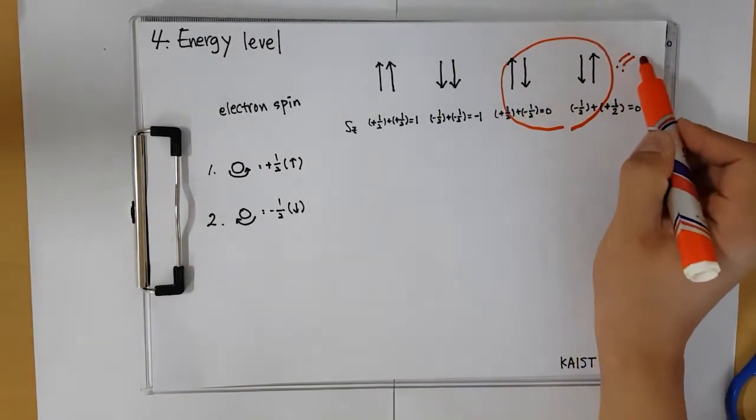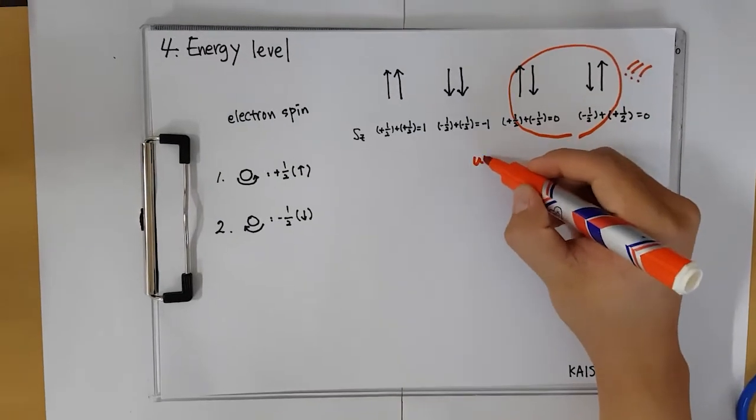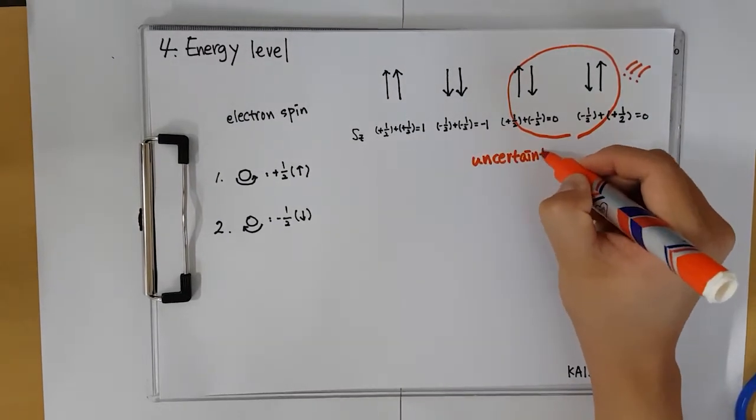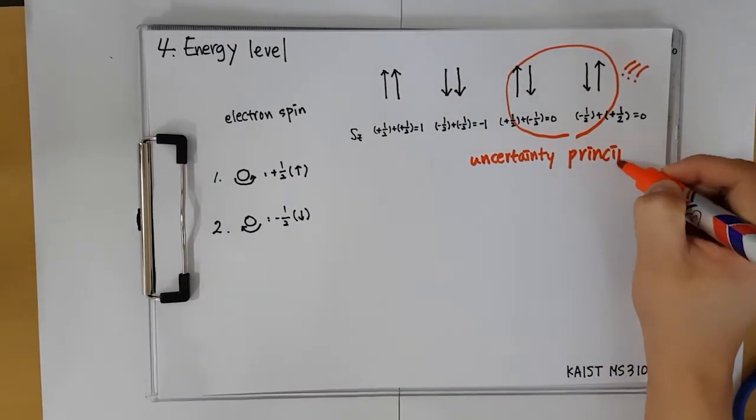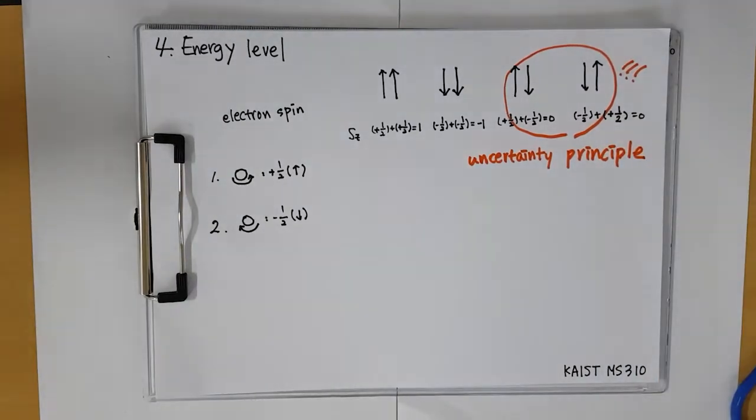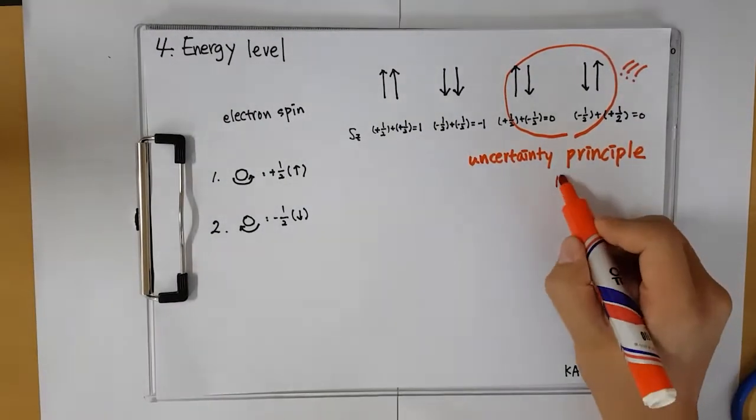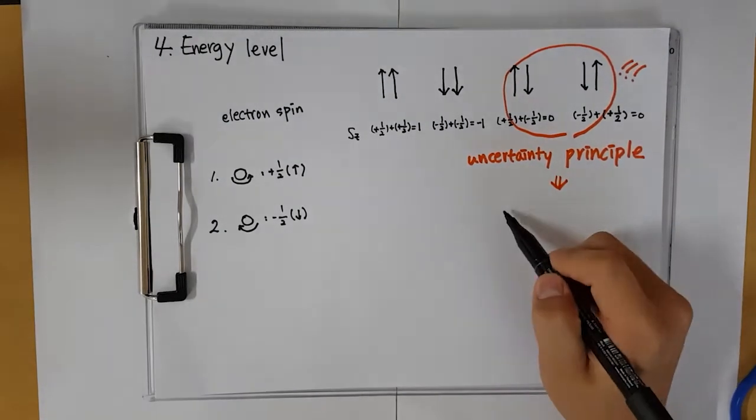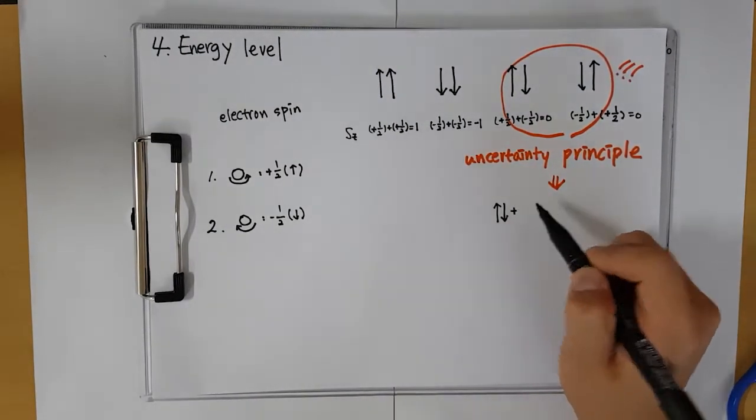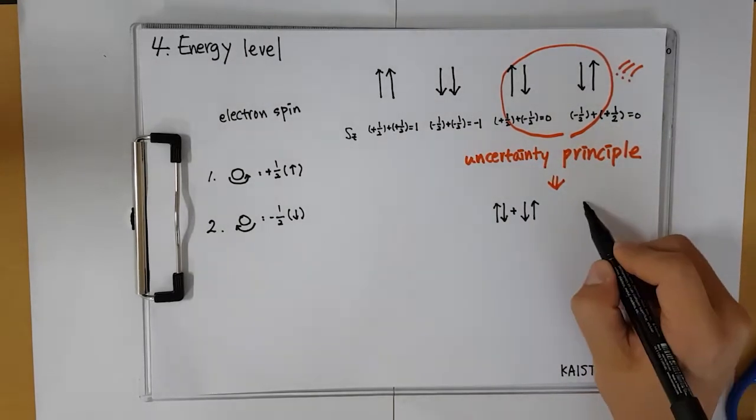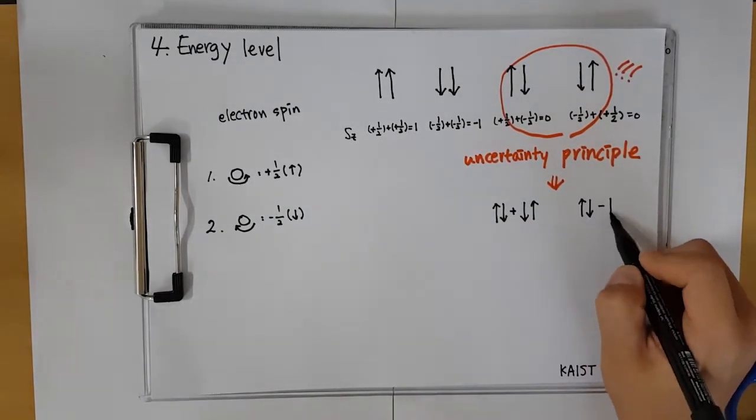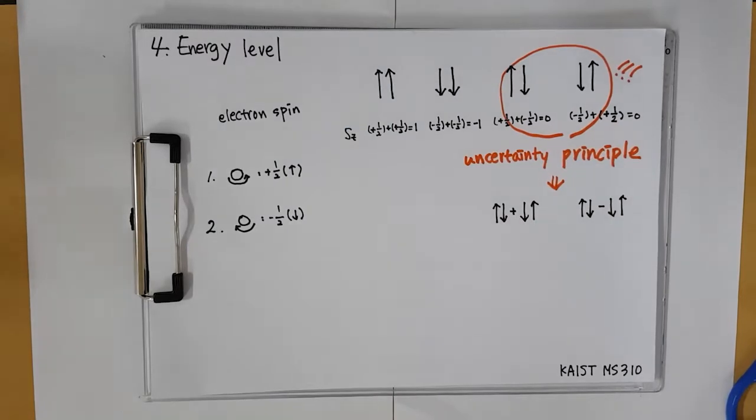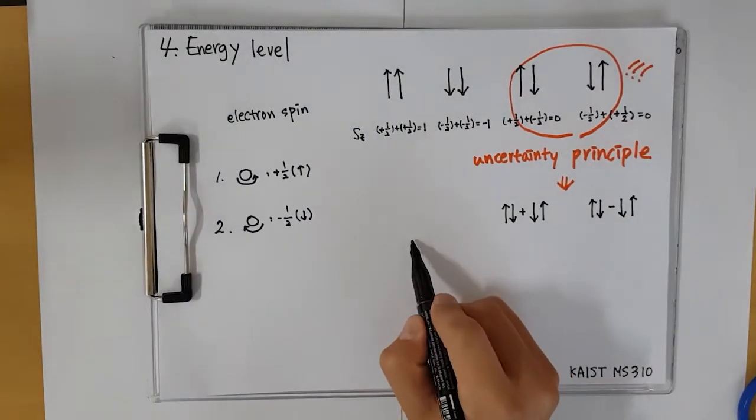However, there is a problem in the anti-parallel cases. Two electrons are independent, so according to the Heisenberg uncertainty principle, we cannot distinguish which electron has the plus half or minus half spin quantum number. Therefore, we just think in terms of the combination of the probability of two electrons. In detail, we change the anti-parallel cases to like this.